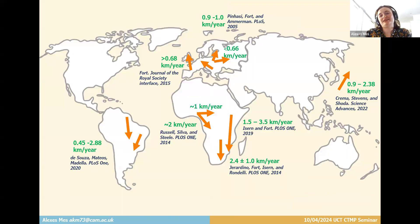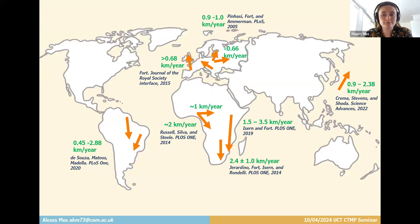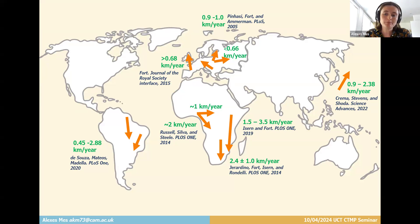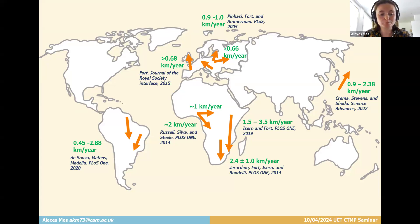Over the last few decades, archaeologists have built a body of work focusing on how fast people, ideas, cultural traits, or crops disseminate. A large portion of these studies are simple regression analyses conducted in a frequentist framework. Today I'll be talking about new methods that can be used to track movements, specifically in the context of the Bantu migration.